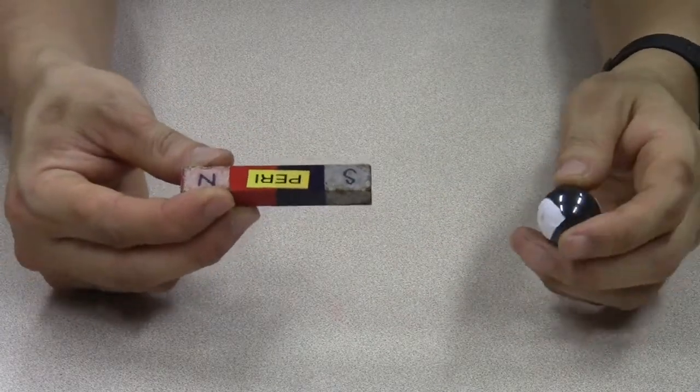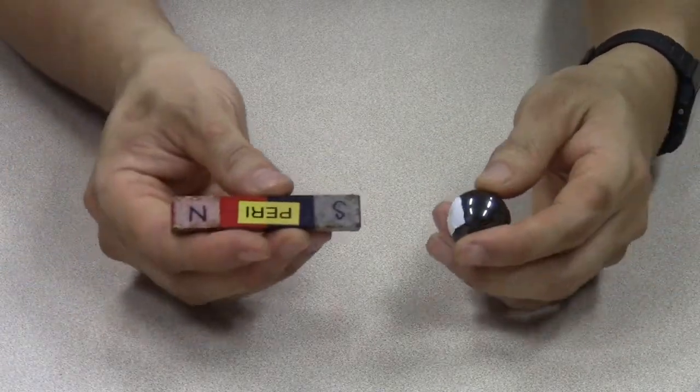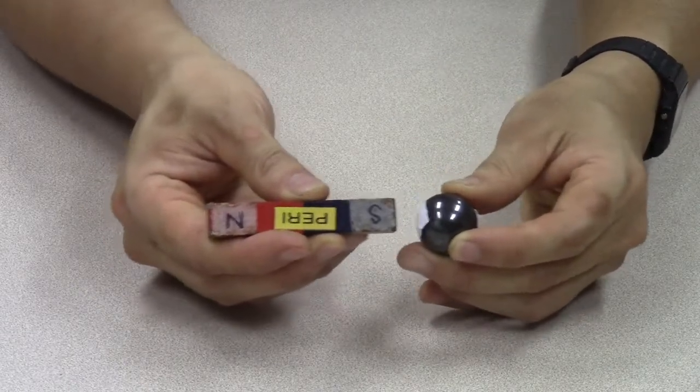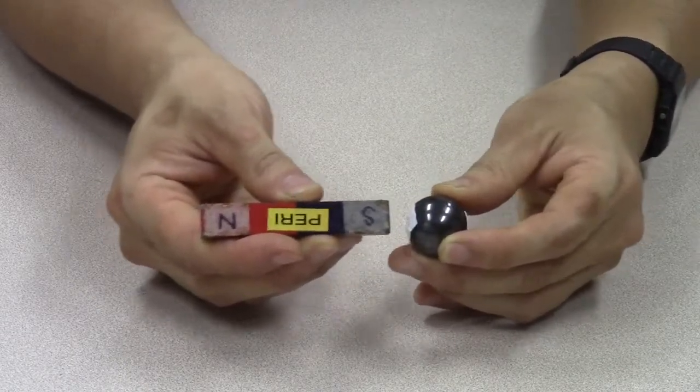So if I bring the south pole of this magnet near to one end of this ball magnet, I can feel that it's repelling. Like poles repel; it's trying to push apart.